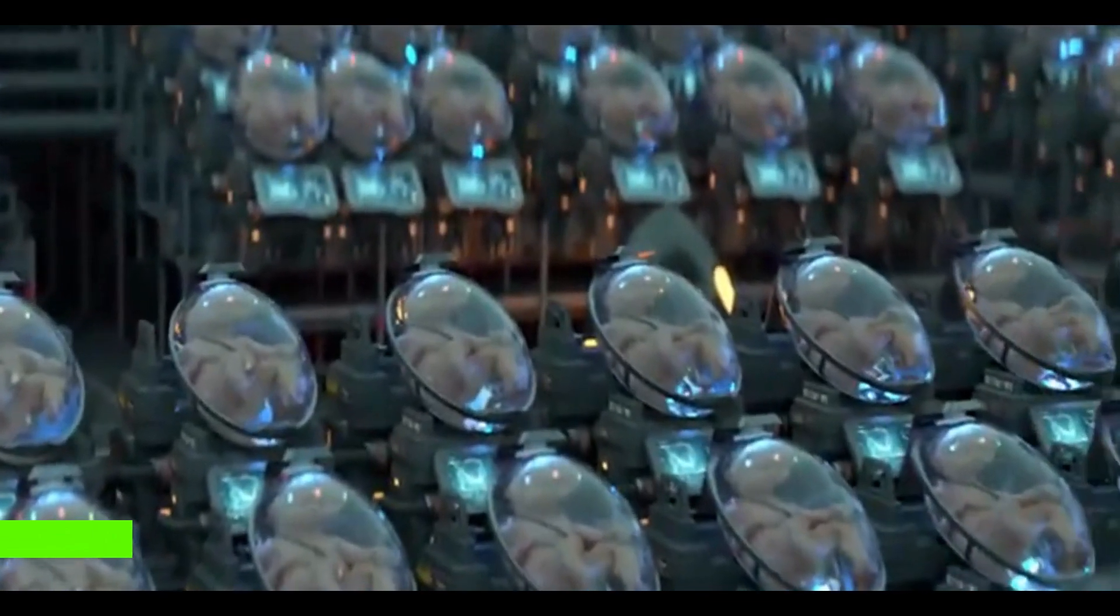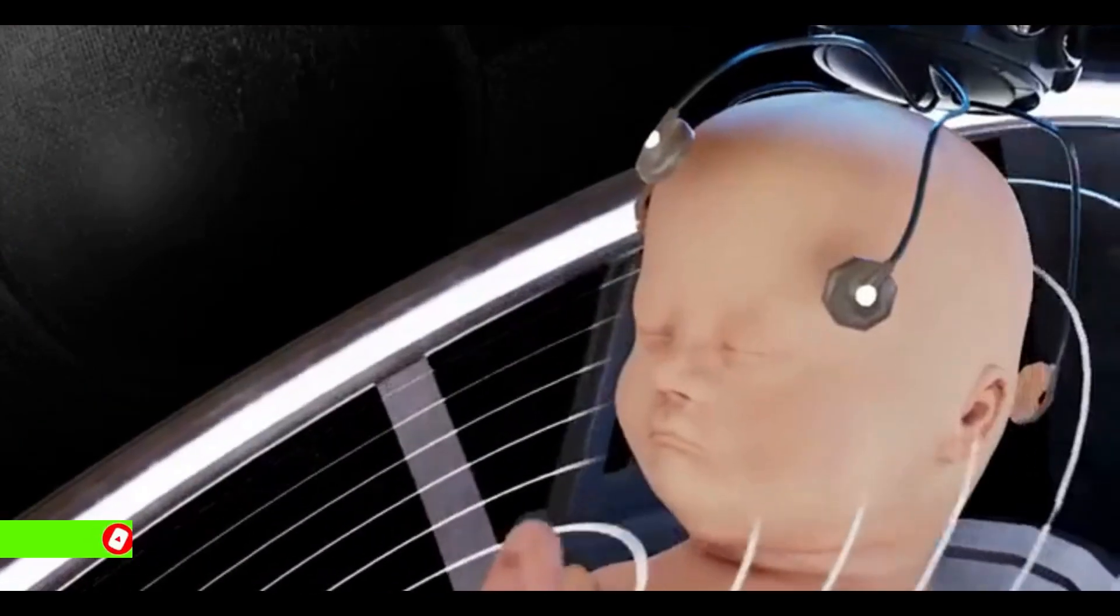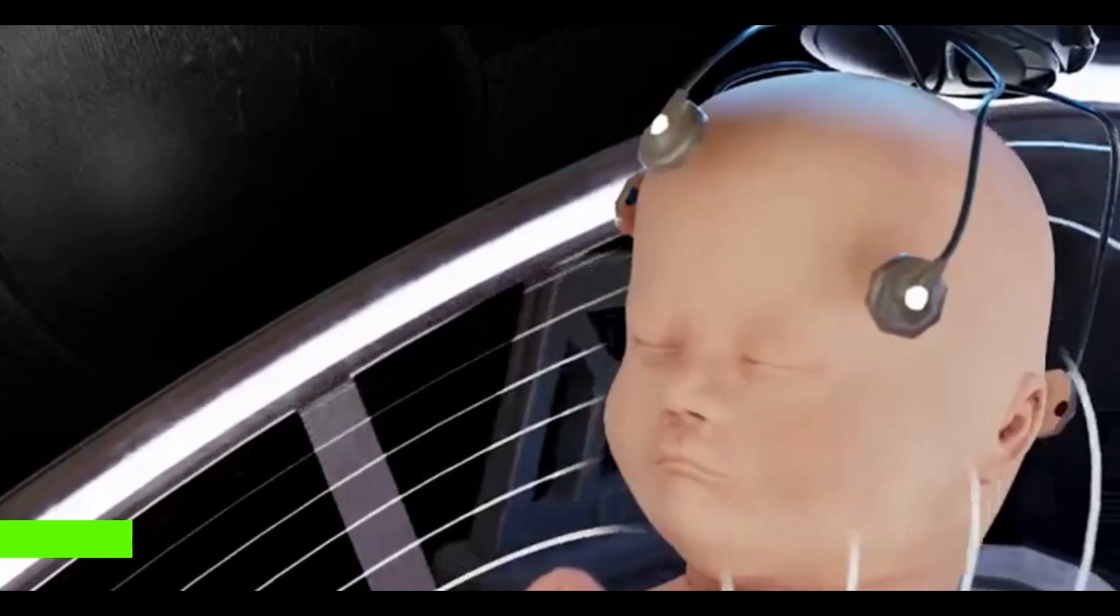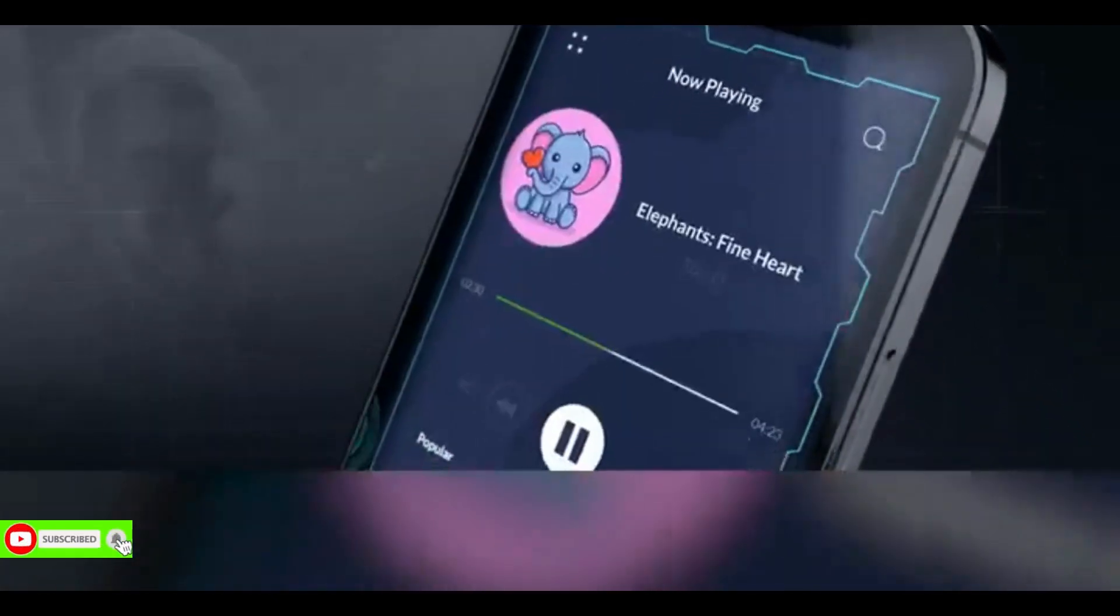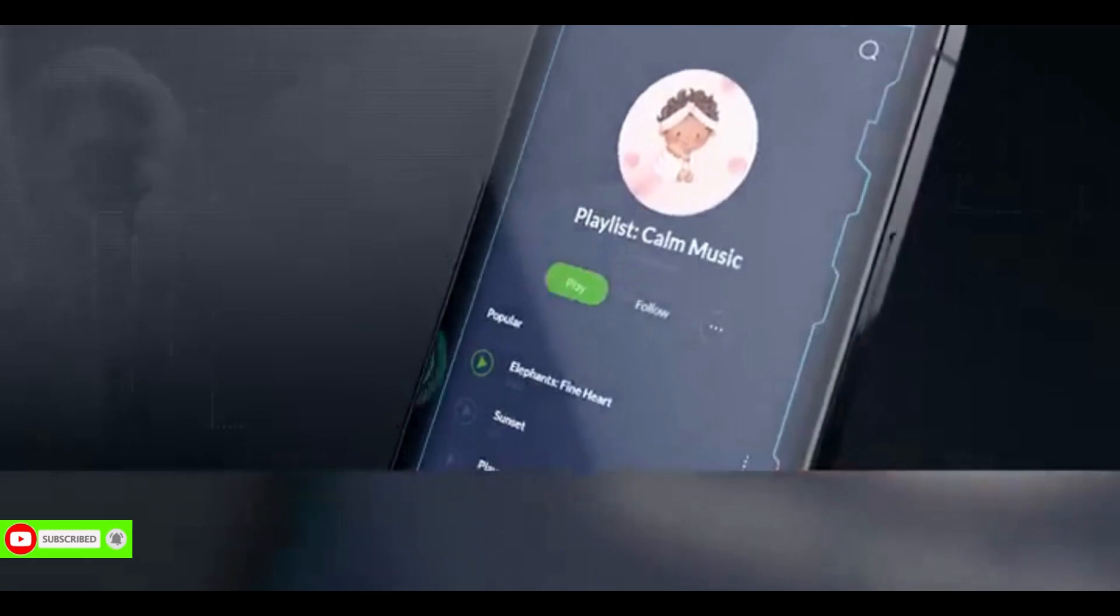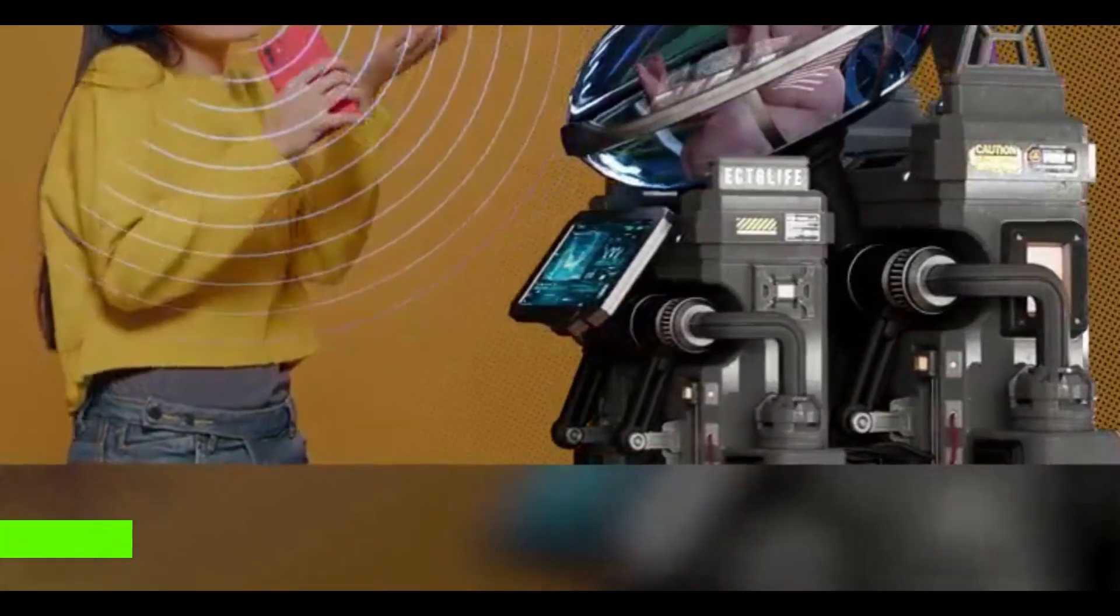Because babies can recognize language and learn new words while still in the womb, Ectolife Growth Pods feature internal speakers that play a wide range of words and music to your baby. Through the app, you can choose the playlist that your baby listens to. You can also directly sing to your baby and make them familiar with your voice before birth.